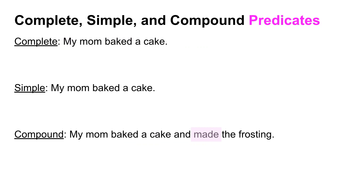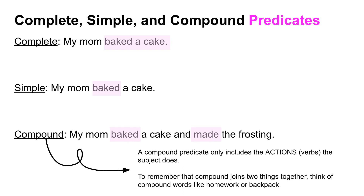Now let's talk about complete, simple, and compound predicates. For 'My mom baked a cake,' the complete predicate is the entire action — 'baked a cake.' For the simple predicate, we want the fewest words that tell us what she did — in this case, just 'baked.' For compound predicates, in 'My mom baked a cake and made the frosting,' she's done two things. The compound predicate includes just the actions: 'baked' and 'made' — not the modifiers, just the actions.